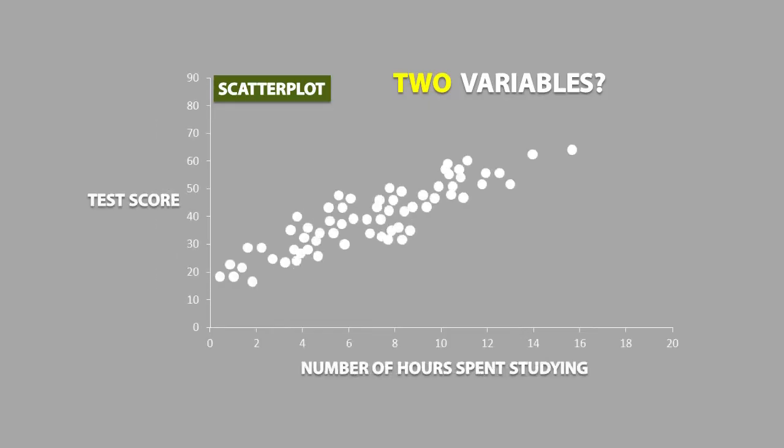This is a typical scatter plot. You can think of each dot as being an individual. So if we looked at this individual, we can see that this person studied for 14 hours and got a test score of 62. And this individual studied for almost 6 hours and got a test score of 30.